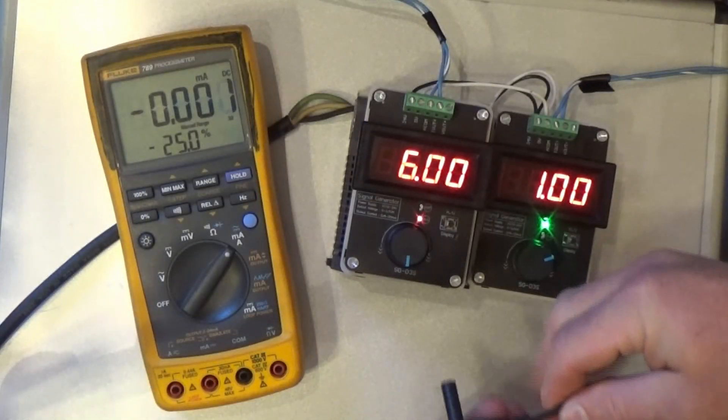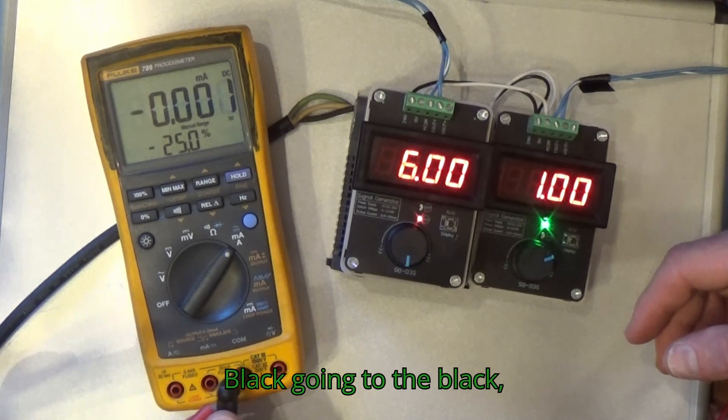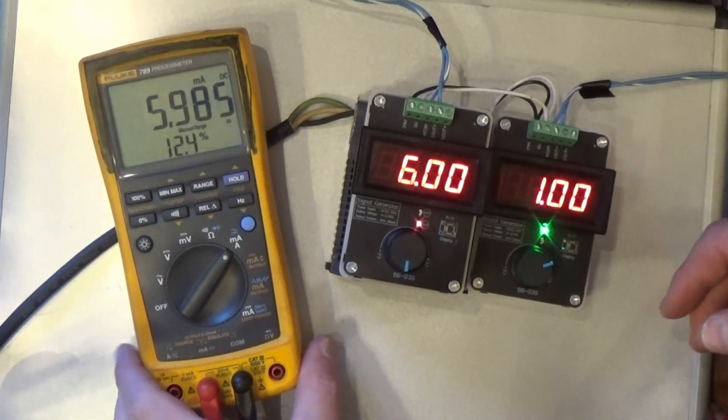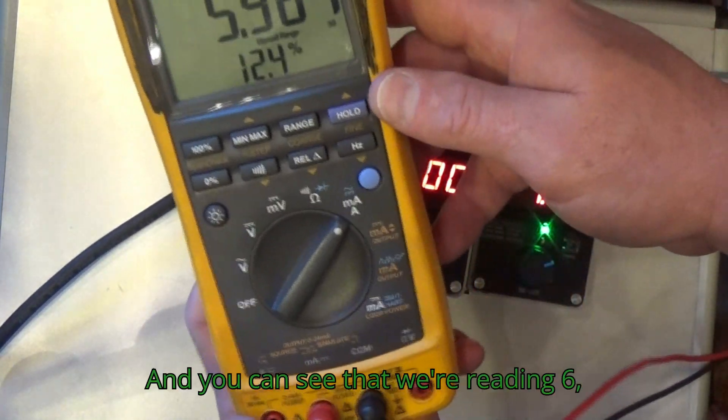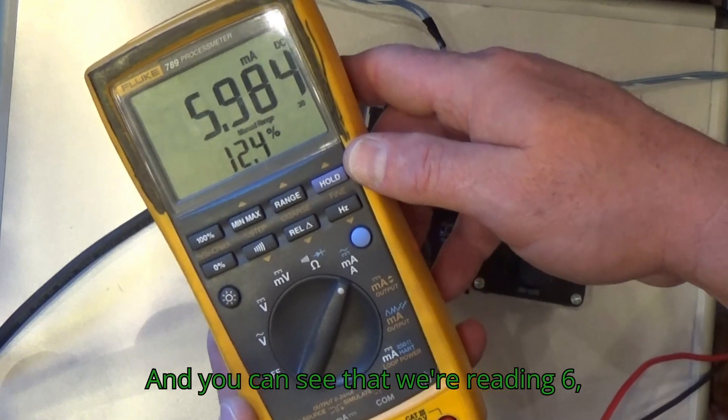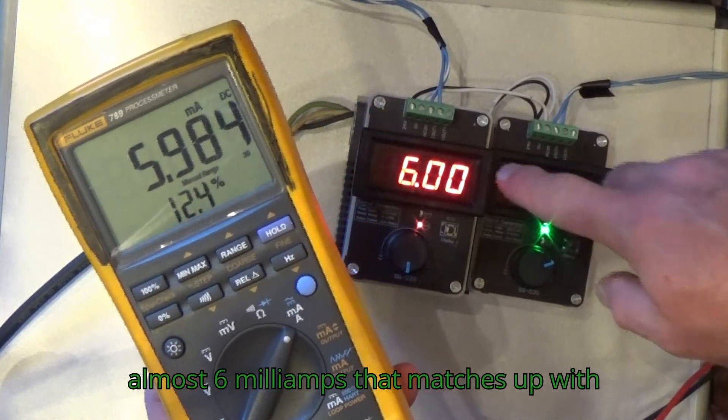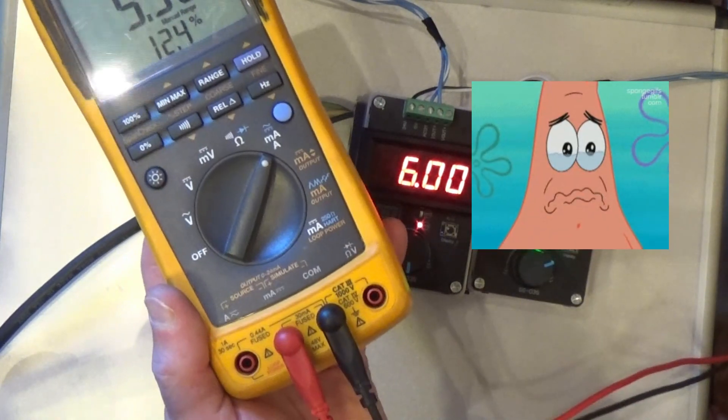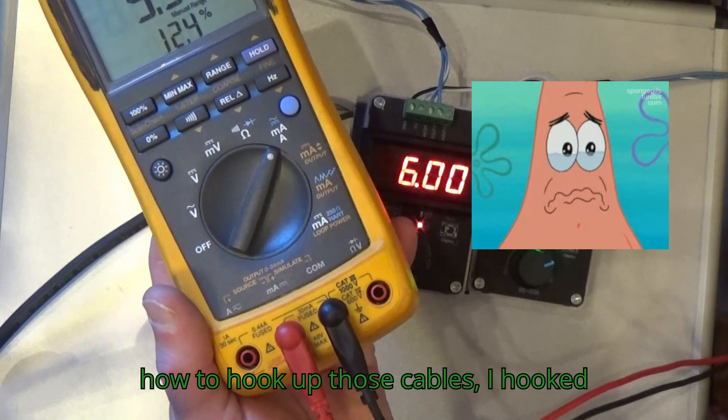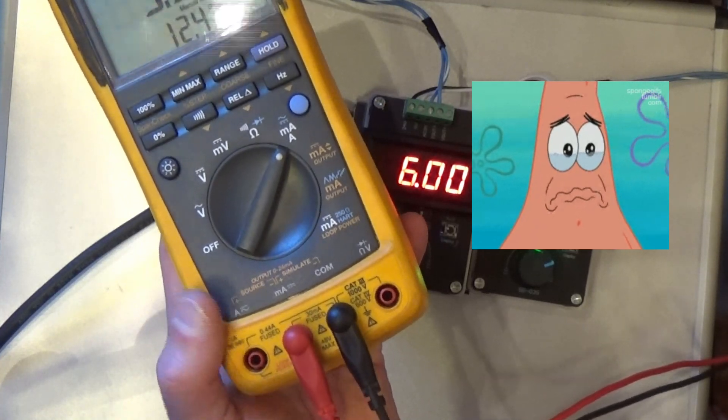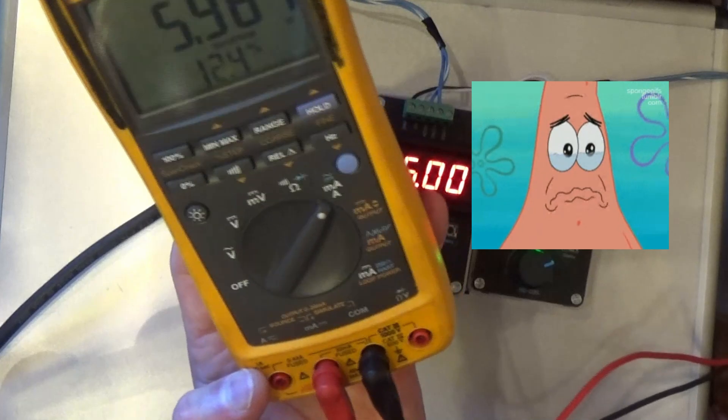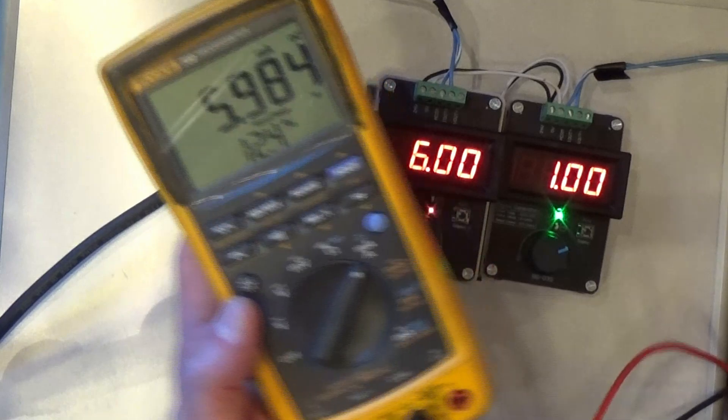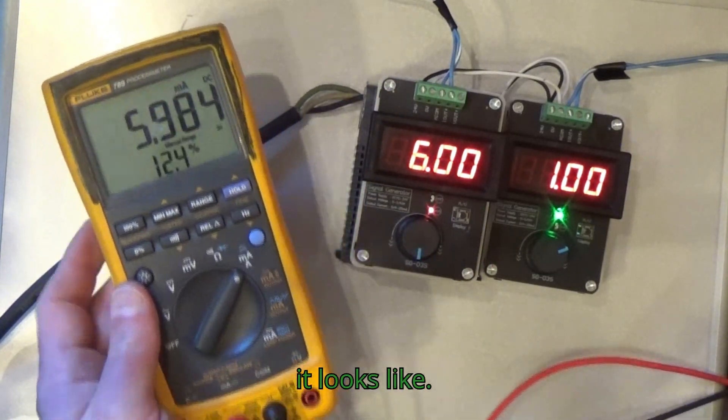Alright, so now we hook up our meter: black going to the black, red going to the red. And you can see that we're reading six, almost six milliamps. That matches up with the six on the transmitter. You notice when I originally described how to hook up those cables, I hooked them up wrong. So even the pros make mistakes at this.